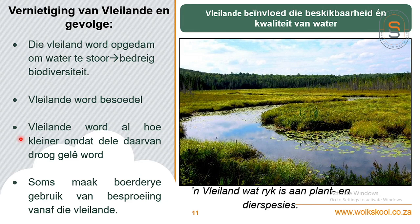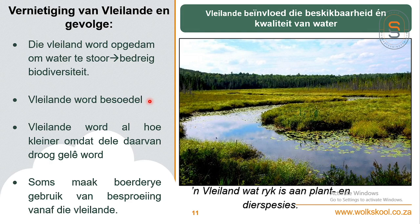Vleilande word al hoe kleiner omdat dele daarvan drooggelê word - mense dink dit gaan goeie landbougrond wees, of hulle wil huise bou. Dan word die vleilande so klein dat dit 'n groot probleem is vir sekere voëlspesies, want voëls het 'n groot area nodig om te broei. Die grootste impak is op biodiversiteit, en dit verlaag die beskikbaarheid en kwaliteit van water. Selfs maak boere gebruik van vleilande se water vir besproeiing, wat weer die beskikbaarheid van water verlaag.